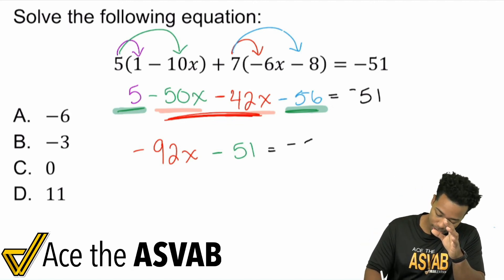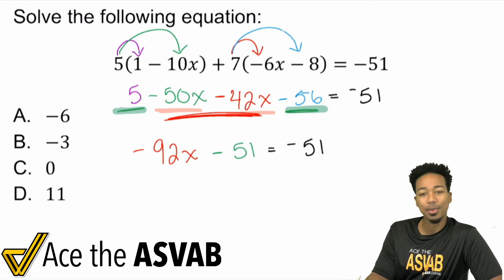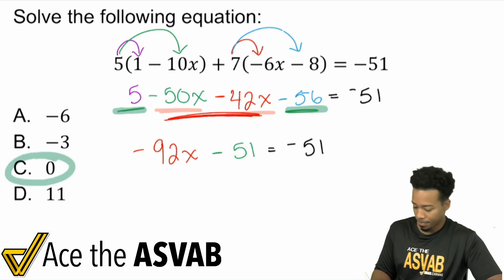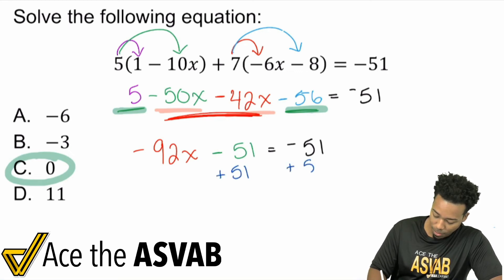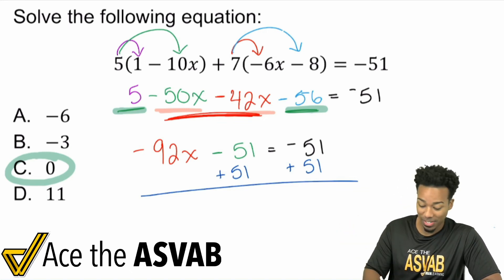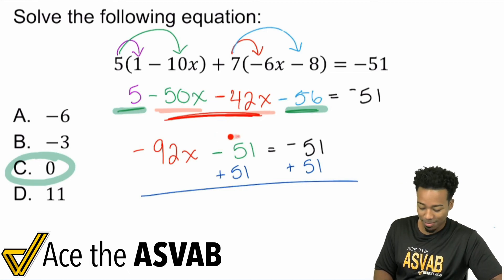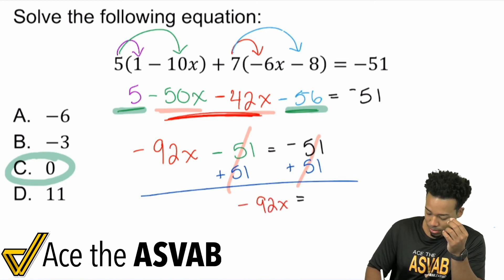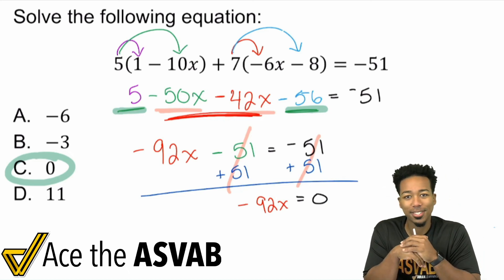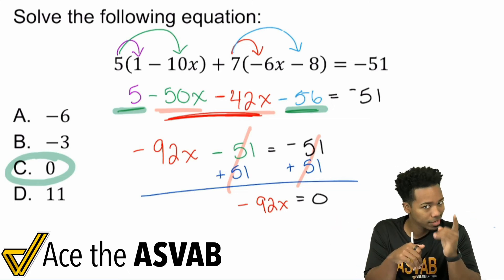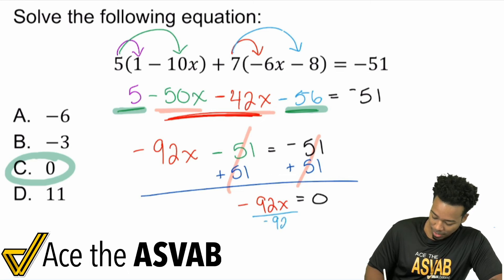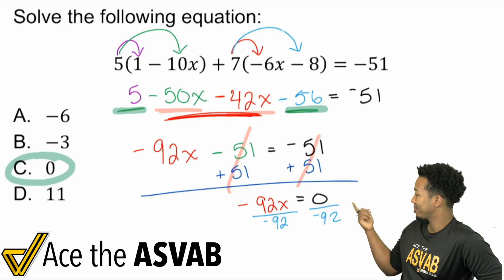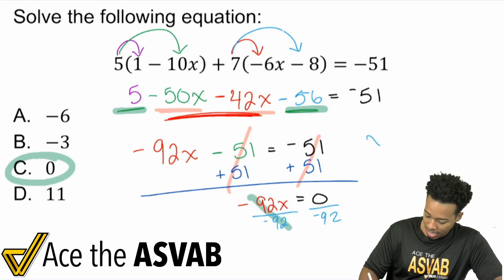Now look at what we have — negative 92X equals negative 51. Both sides have minus 51, so when we add 51 to both sides, it cancels right out. We end up with negative 92X equals zero. To finish this off, we divide both sides by negative 92 to isolate X. But zero divided by anything is zero — so this cancels out and we get X equals zero.